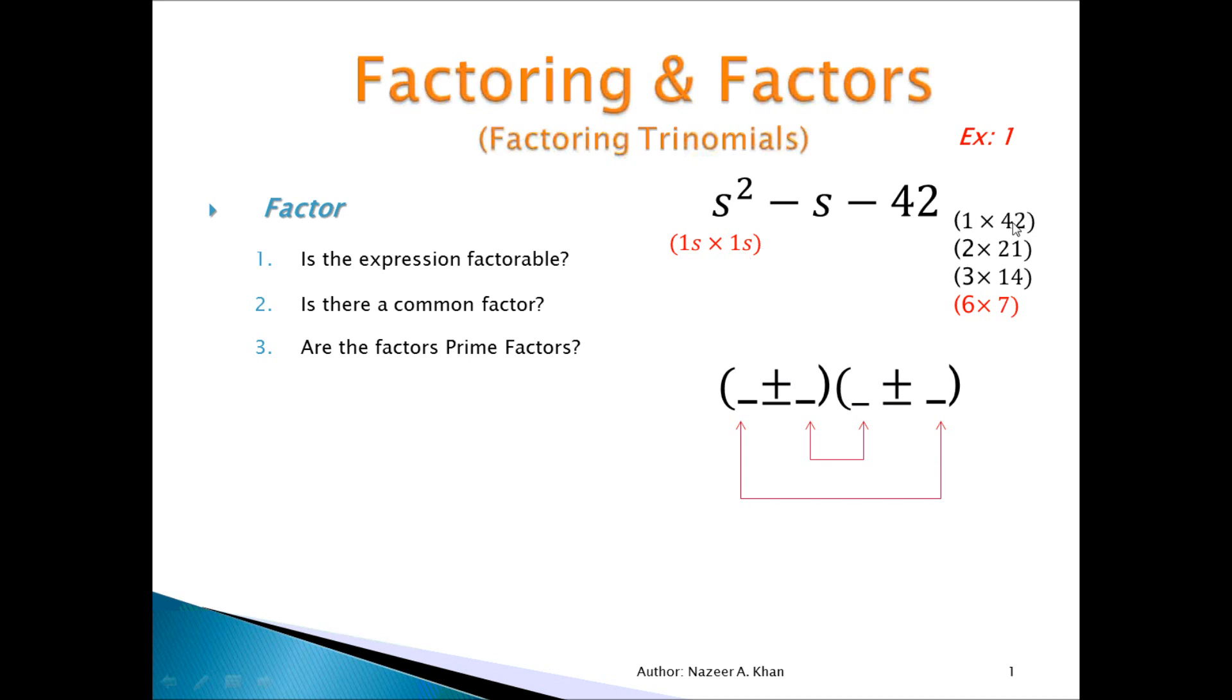When we look at this C term, that has several factors. It has 1 times 42 would be factors, or multiples, 2 times 21, 3 times 14, and 6 times 7. So these are the factors. When you multiply these, they'll give you 42. When you multiply these, you will get S squared.